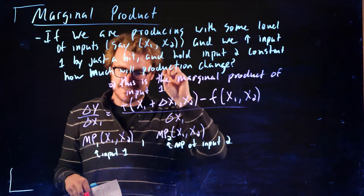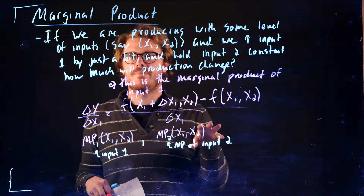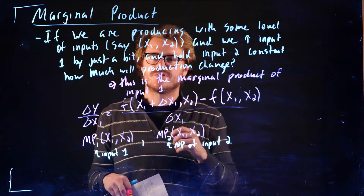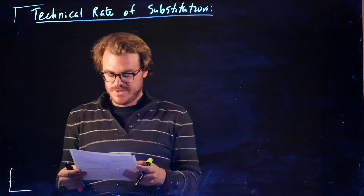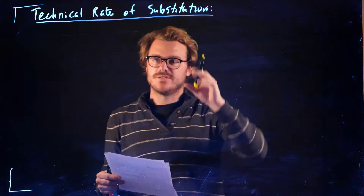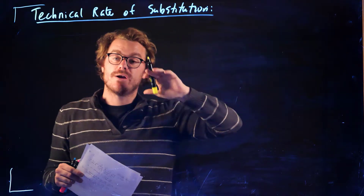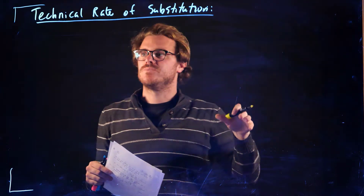This is very similar to the idea of marginal utility that we saw back in chapter 3 or 4, when we first started seeing marginal utility. The next concept we're talking about is the technical rate of substitution, and again this is going to look very similar to a concept we learned about in utility maximization, which was the marginal rate of substitution.